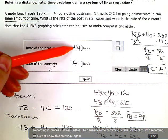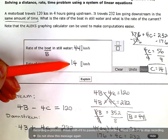So my final answer, 44 kilometers per hour for the boat and 14 kilometers for the current.